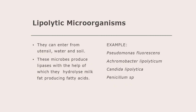The last type is lipolytic microorganisms. They can enter through utensils, water, and soil. These microbes produce lipases, with the help of which they hydrolyze milk fats, producing fatty acids as the end product. Examples are Pseudomonas fluorescens, Achromobacter, Candida lipolytica, and Penicillium. As you can see, fungi, yeast, and bacteria — all three types of microbes — are generally found in raw milk.